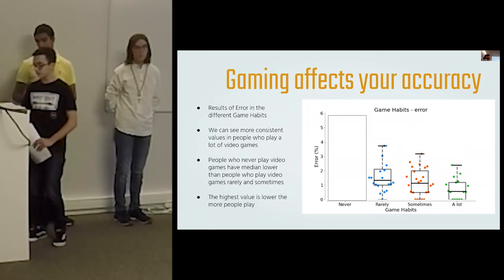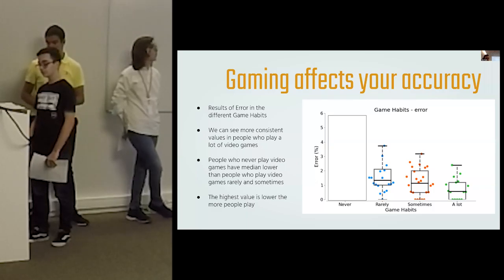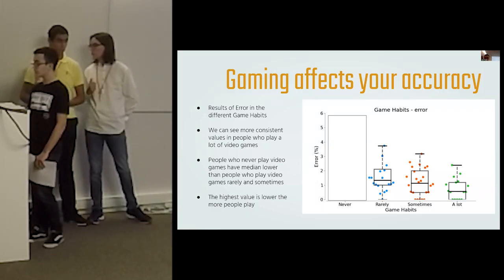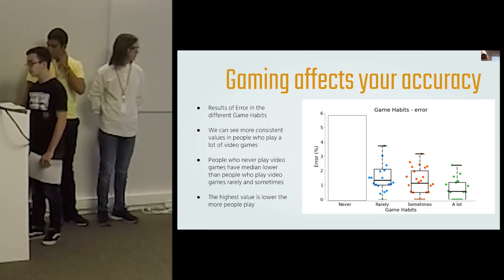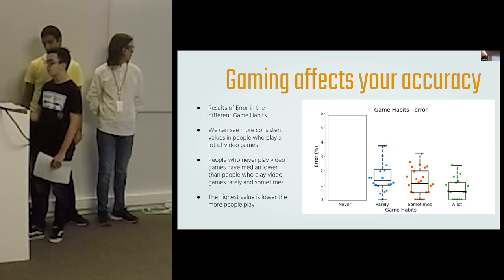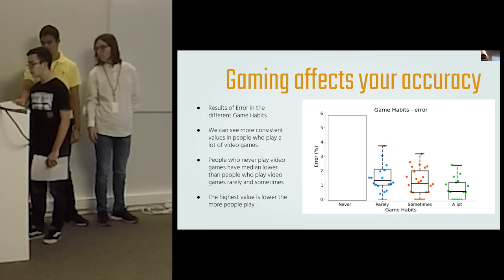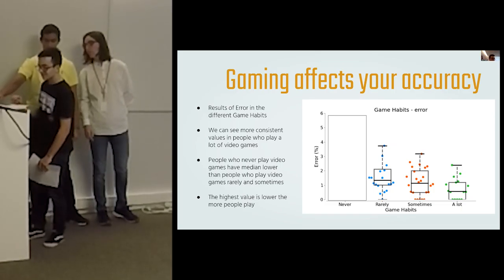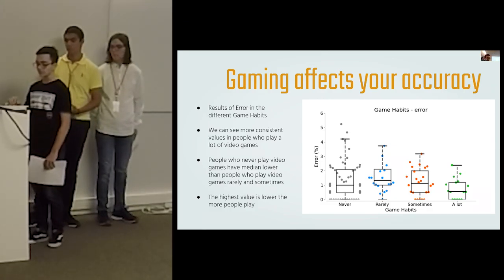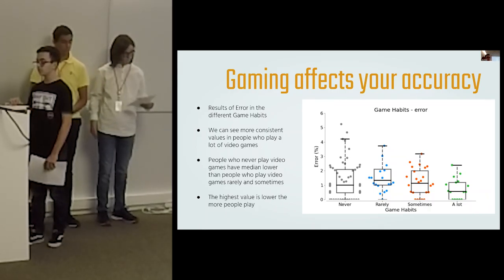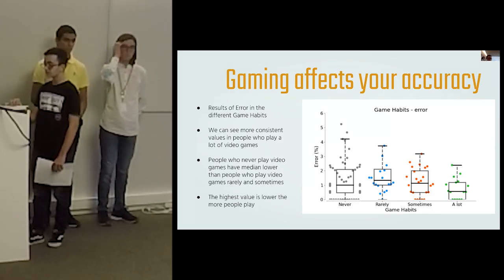Here you can see the fourth graphic. On this graphic, we are seeing the correlation between how much someone plays video games and the percentage of errors. We can see more consistent values in people who play a lot of video games. Beyond this, we can see a decrease in the median starting at the rarely game habits. It's very interesting that although people who never play video games have inconsistent values, they have a median lower than the people who play video games rarely or sometimes. It's also interesting that between the people who play video games, the median and highest values are lower the more they play.